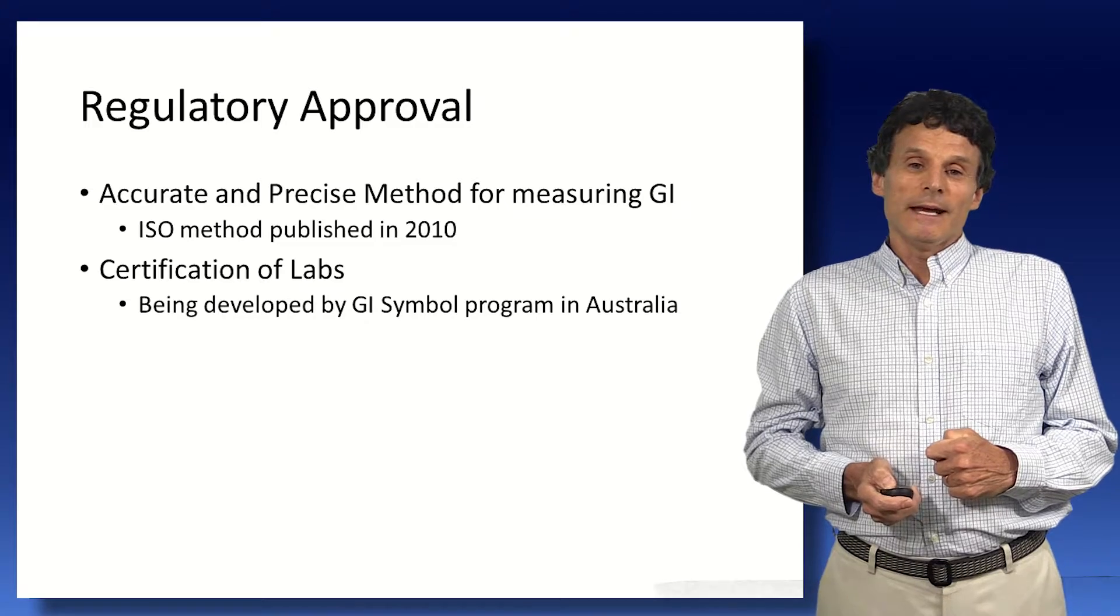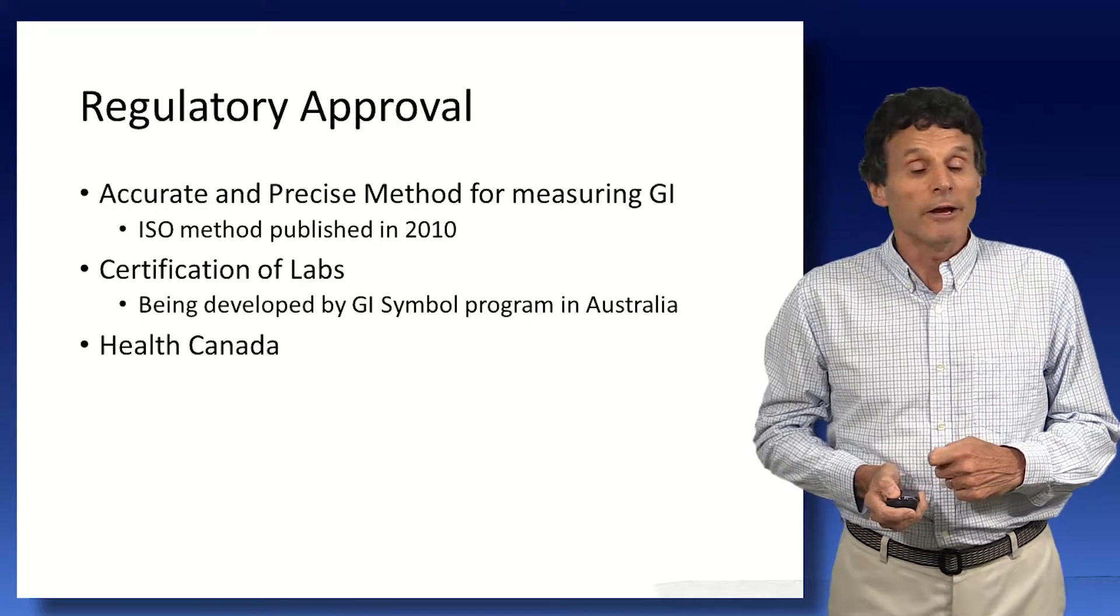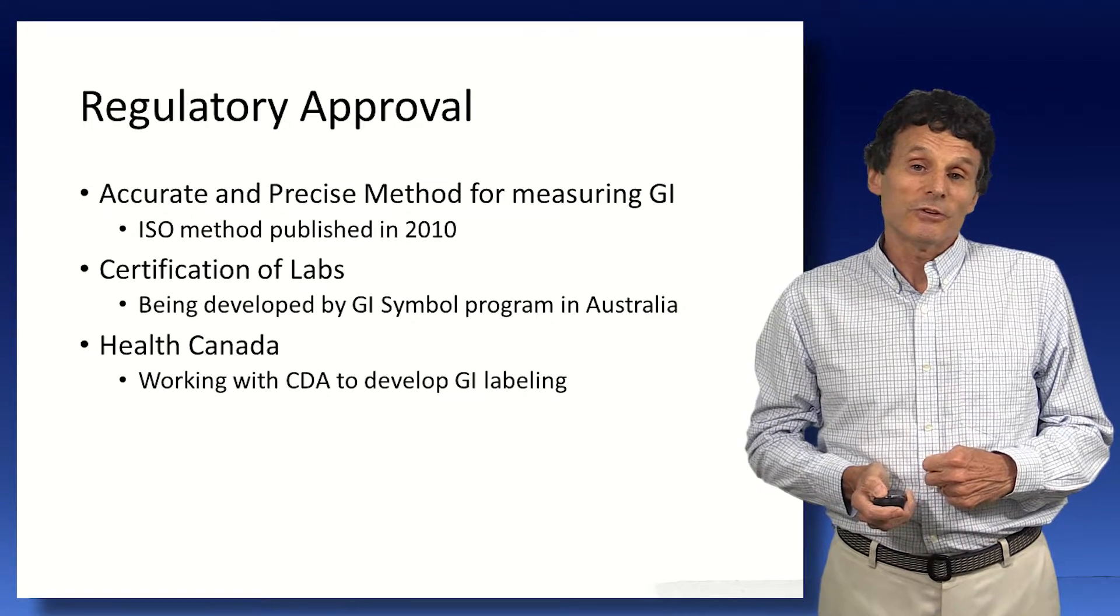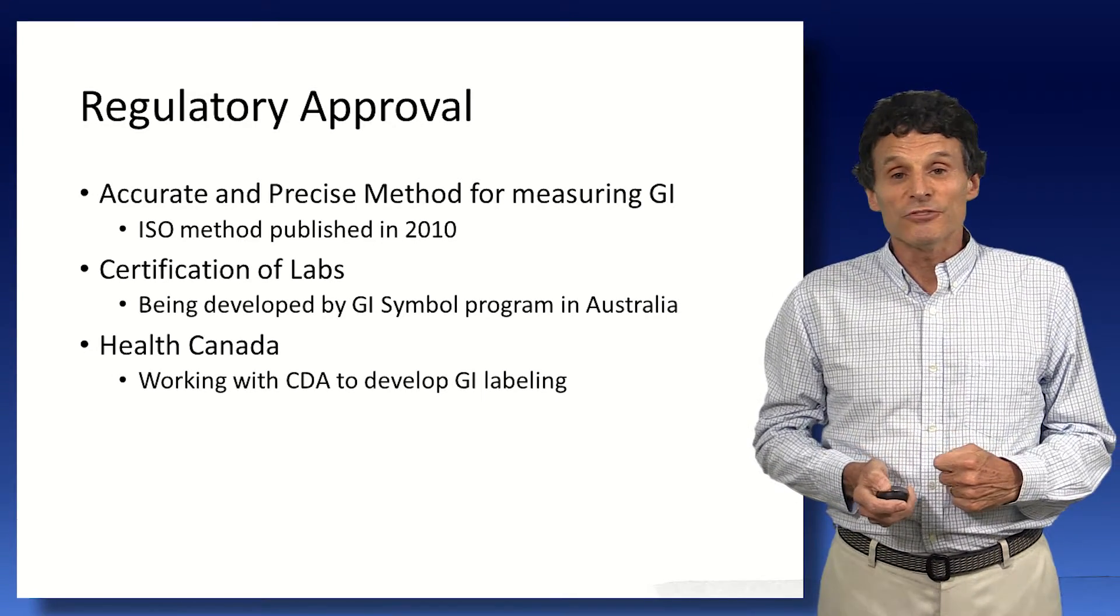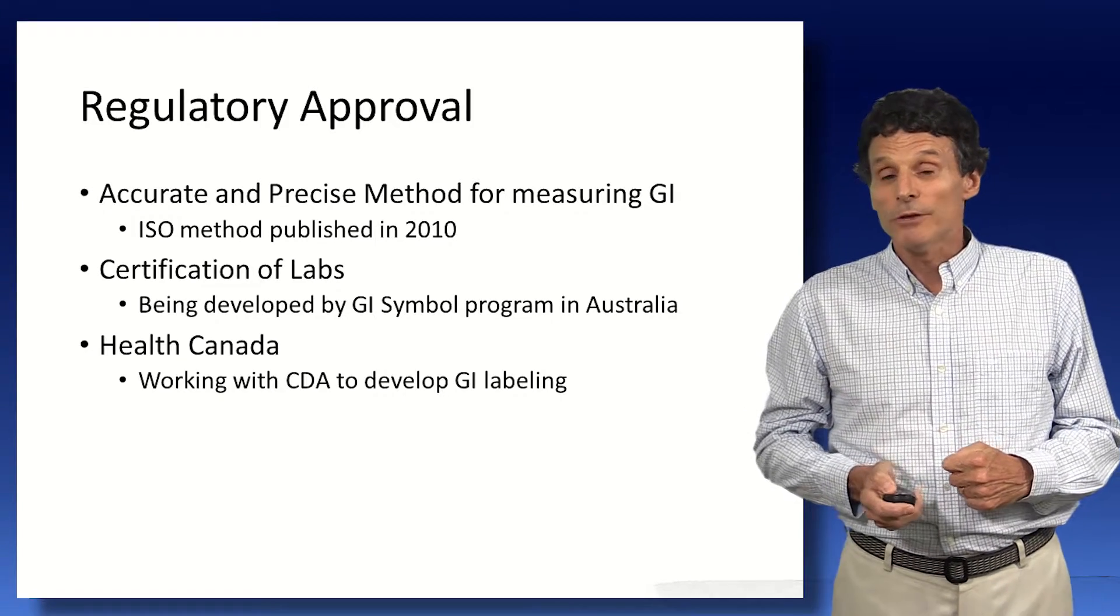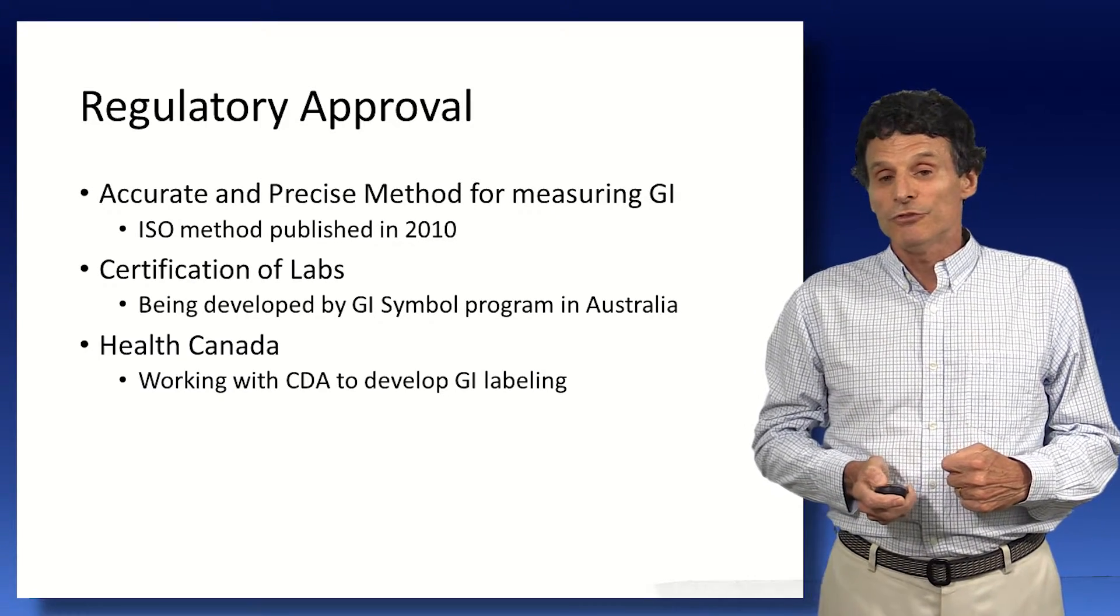We need to certify the proficiency of labs in measuring GI. This varies widely and there is a program being developed by the GI symbol program in Australia. We need to work on this in Canada. And we also have now Health Canada has agreed to work with the Canadian Diabetes Association to develop a system for GI labeling so that consumers and health professionals can know what the GI values of the foods in their supermarkets are.